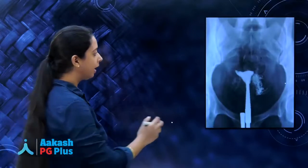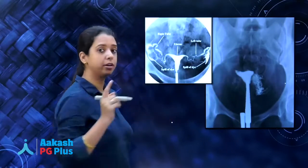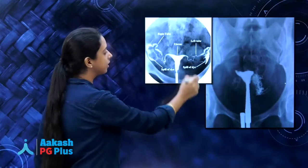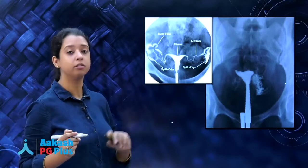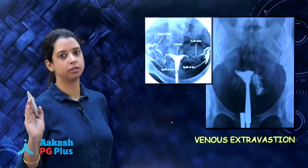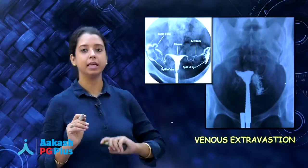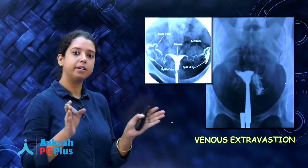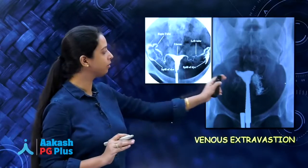Next, looking at another HSG: comparing with the normal, it has one vagina and the uterus seems normal, but again you cannot see the tubes. The tube looks like a single thread-like structure. This multiple lacy structure you see is not the tube — it might be another bilateral cornual block. What is this lacy pattern then? This is venous extravasation. Extravasation is leakage of fluid out of the container — the contrast, instead of going into the tubes, is leaking into the myometrial vessels or lymphatics. That leads to extravasation, and that is how it looks on HSG.